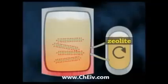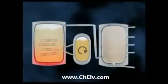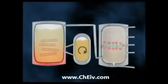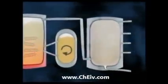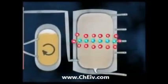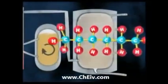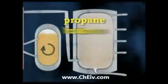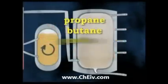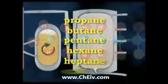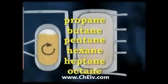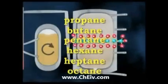Catalytic cracking is the major source of hydrocarbons with five to ten carbon atoms in the chain. The molecules most formed are the smaller alkanes used in petrol, such as propane, butane, pentane, hexane, heptane and octane — the components of liquid petroleum gas.